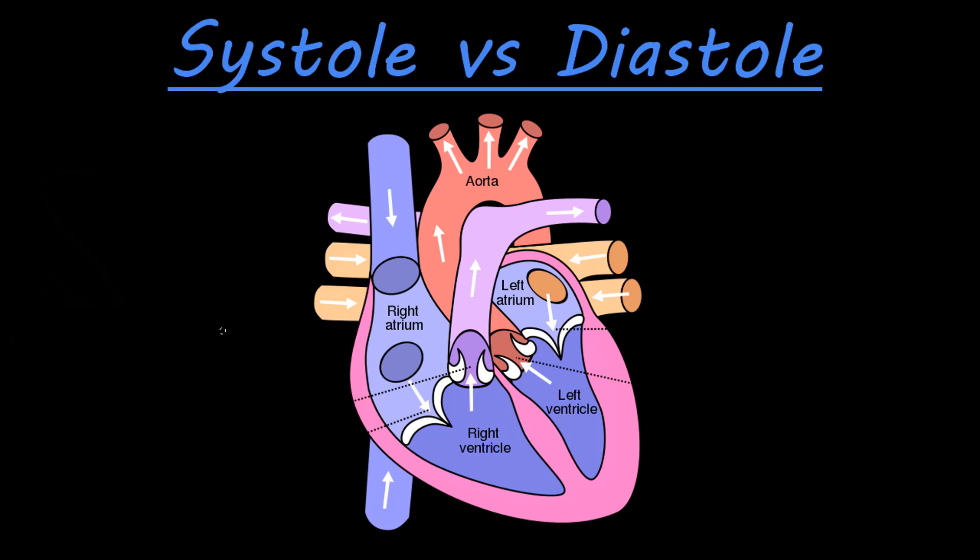Today we're going to talk about the difference between systole and diastole. Systole is a term regarding the cardiac cycle, and all it refers to is basically when the heart muscle contracts. If it's just known as systole, generally this refers to the ventricles — so systole is going to refer to ventricular contraction.